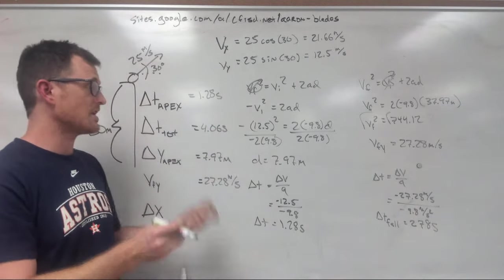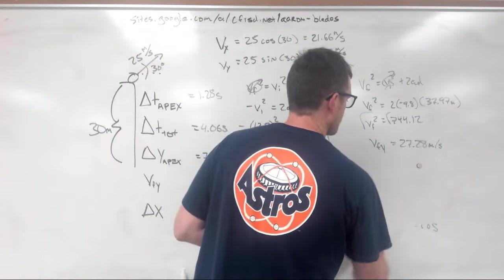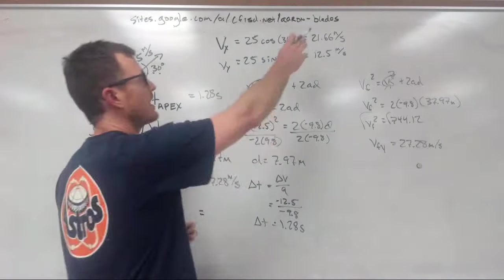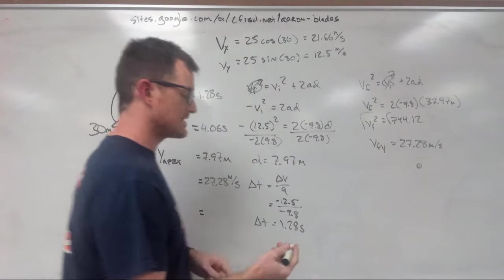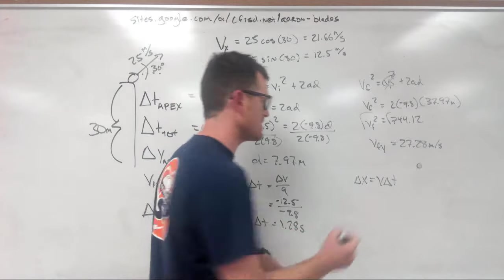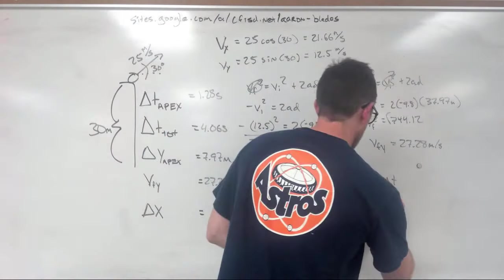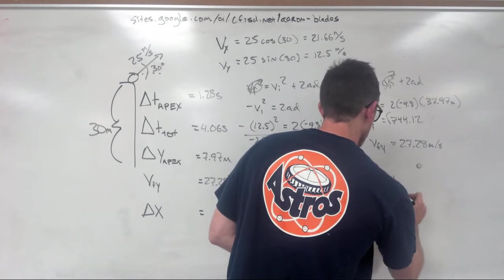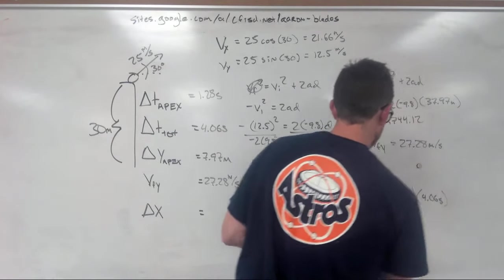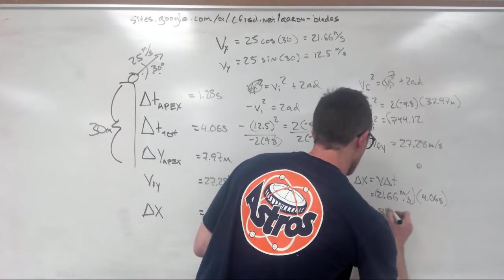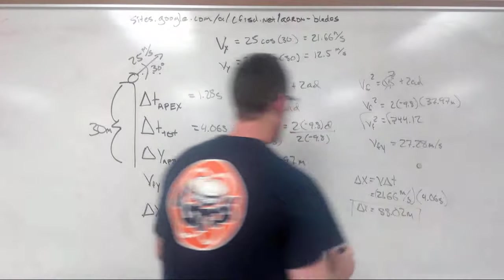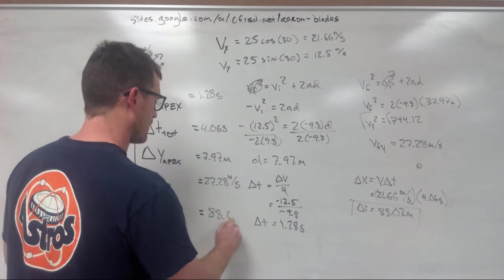Now it seems like we're pretty much done, and we are pretty close to done. But we need to figure out how far from the platform the ball gets. So we're going to take our total time here, multiply it by our Vx in that direction, and that's how we're going to get it. Written out, we have our delta X equals V delta T. We should remember this from our constant velocity unit. So our velocity in the X direction is 21.66 meters per second multiplied by our total time in the air, or 4.06 seconds. Now if we punch both of those into our calculator, we end up with a total horizontal displacement of 88.02 meters.